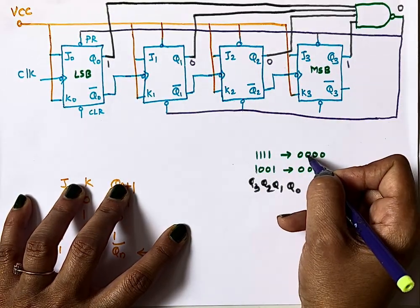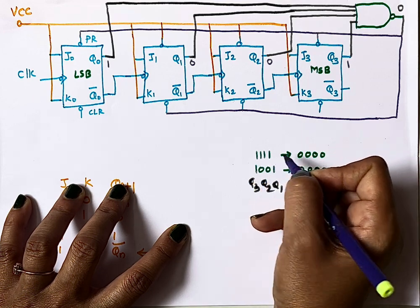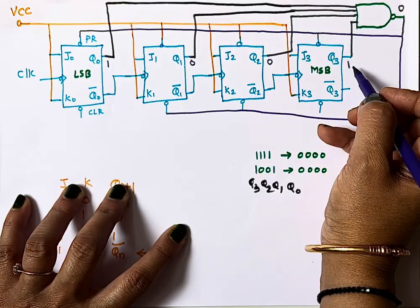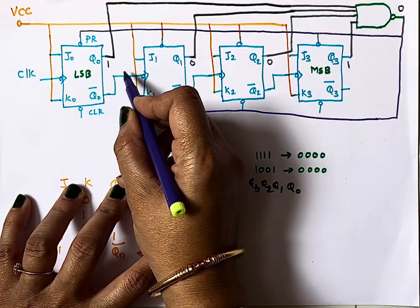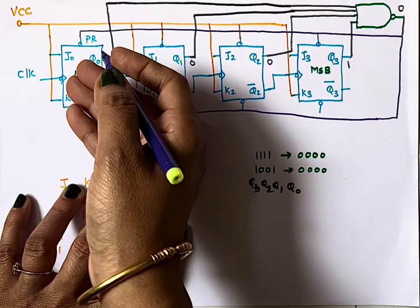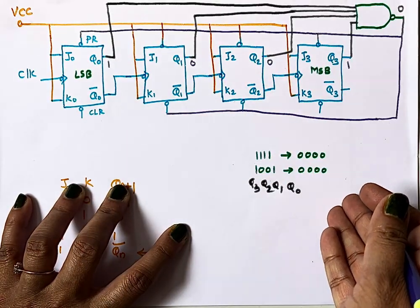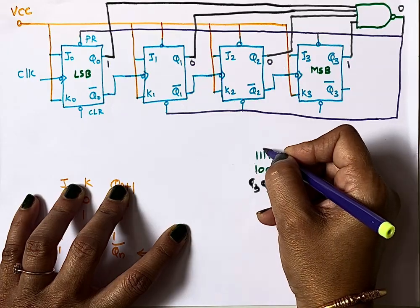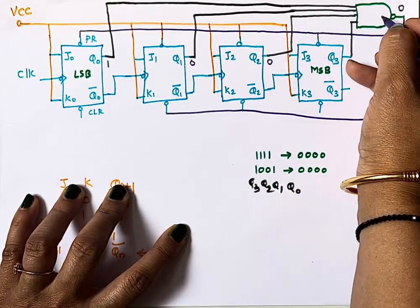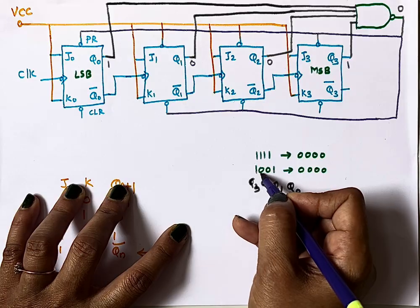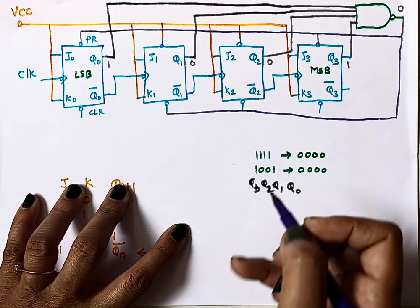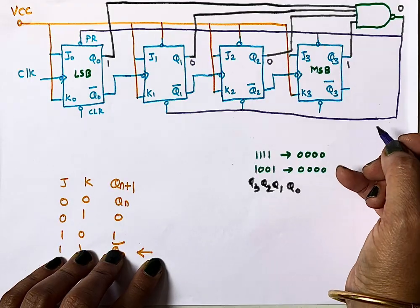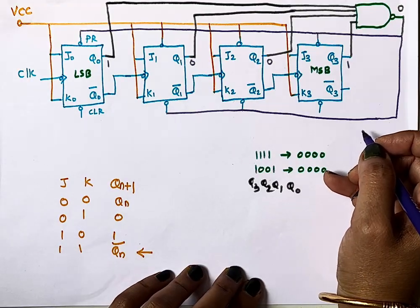So the circuit works as follows: after 0, this reset circuitry forces the output to 1001. This is our complete mod 10 down counter design. The circuit structure is the same for any 4-bit down counter — Q0, Q1, Q2, Q3 all feed into the NAND gate, and based on the target starting number, you connect the NAND gate output to the appropriate preset and clear inputs.